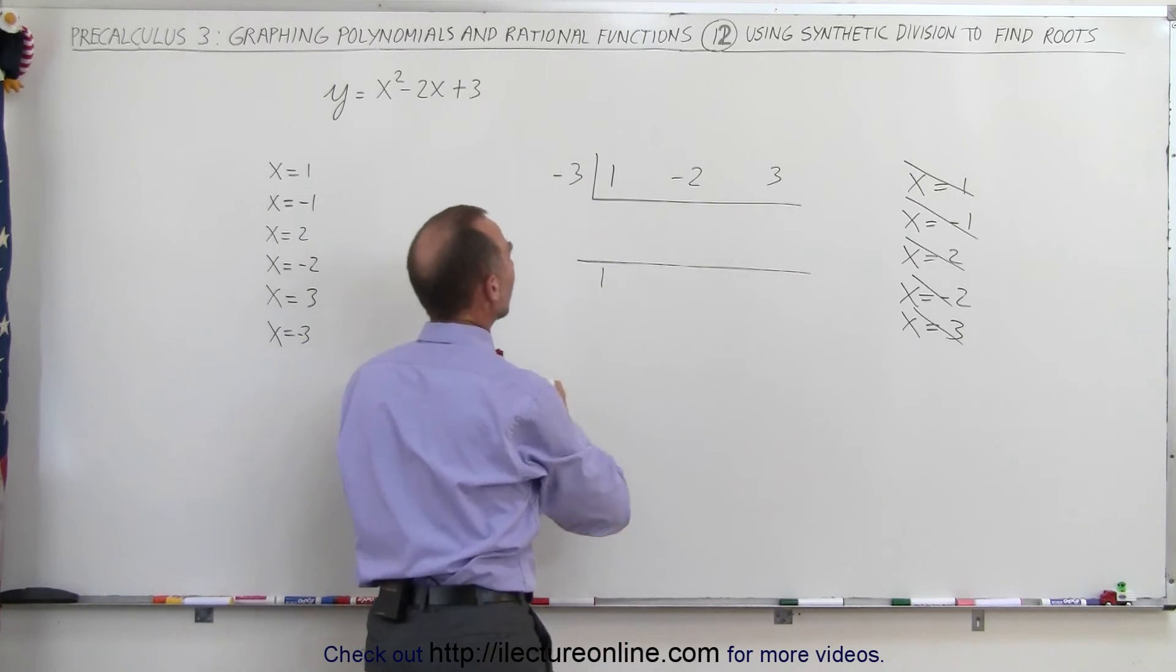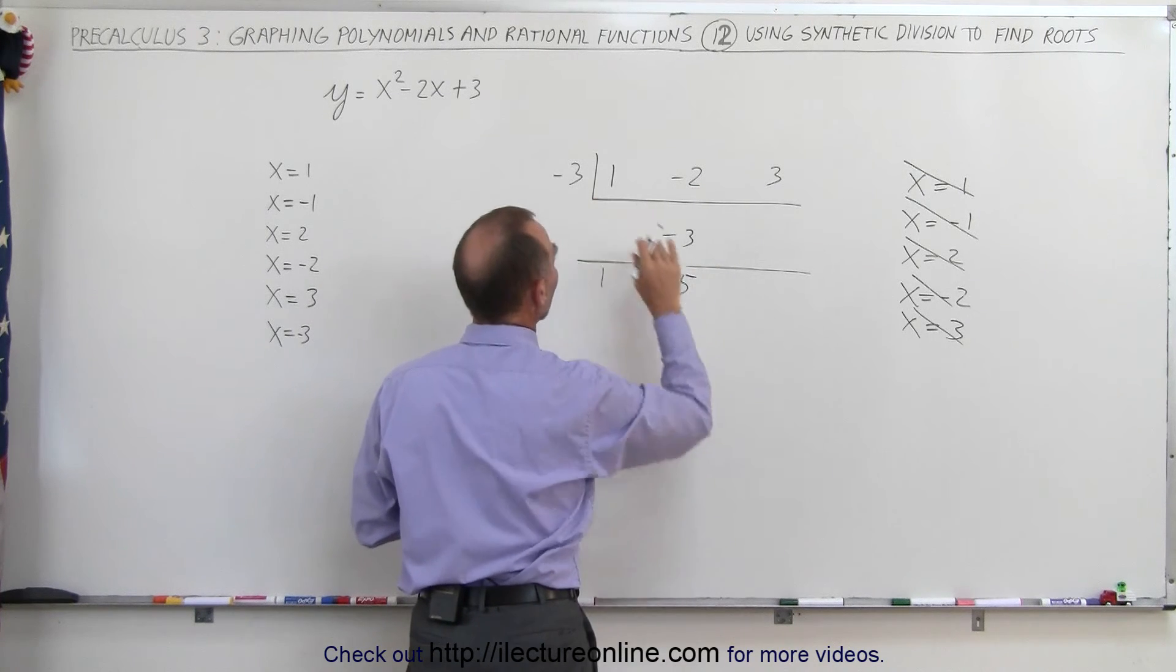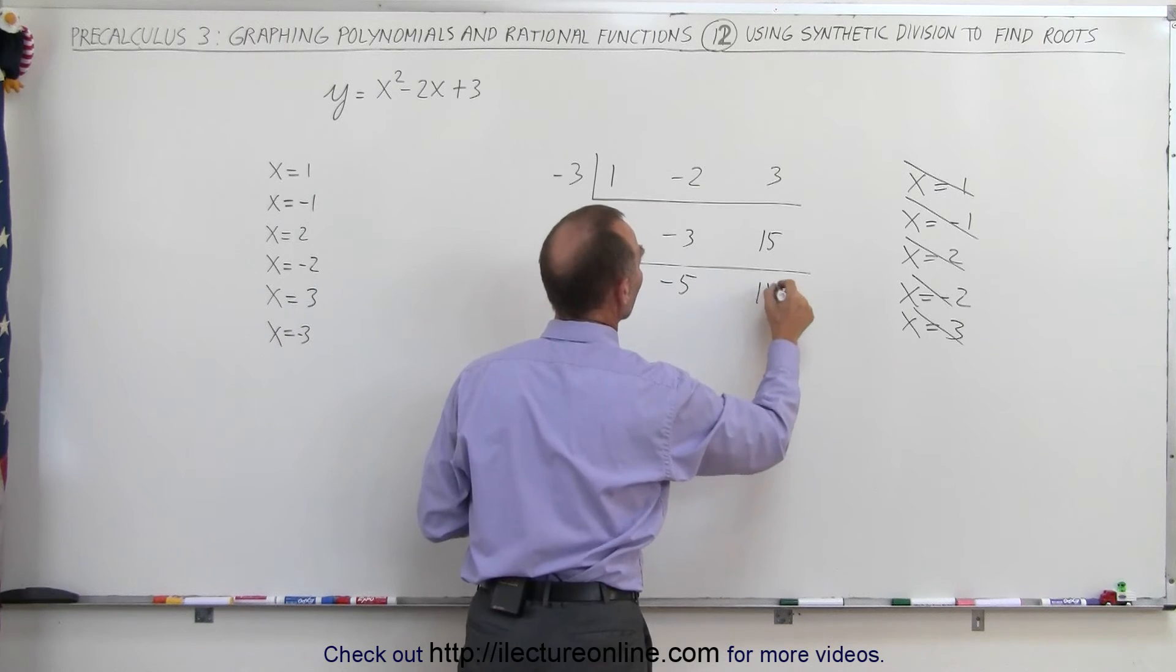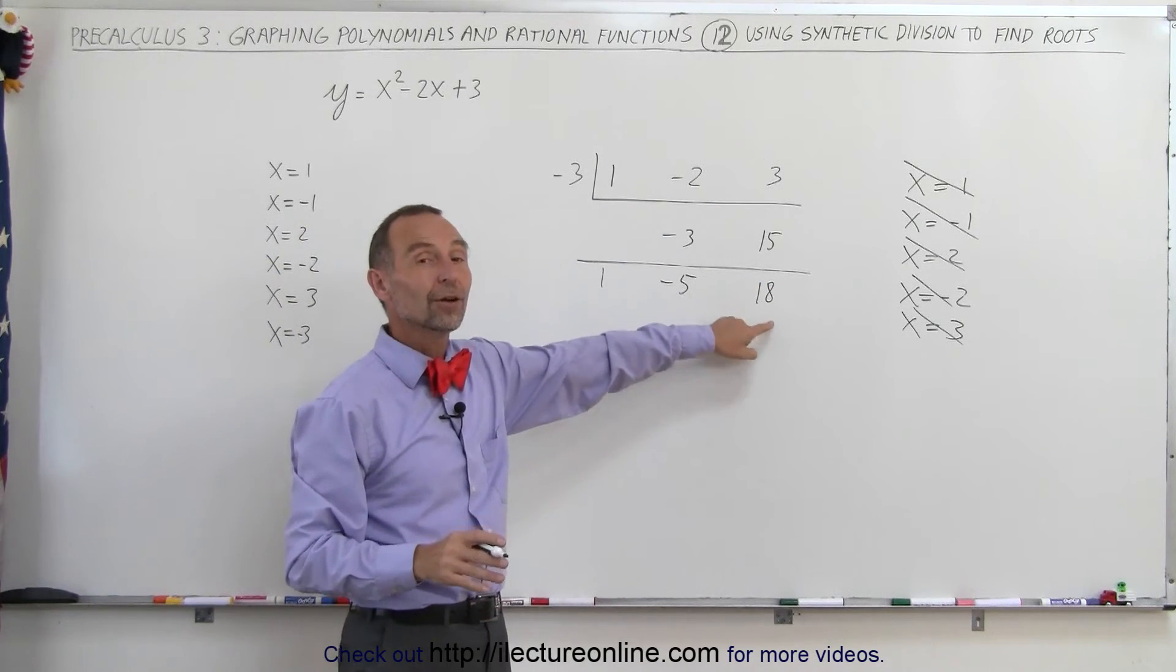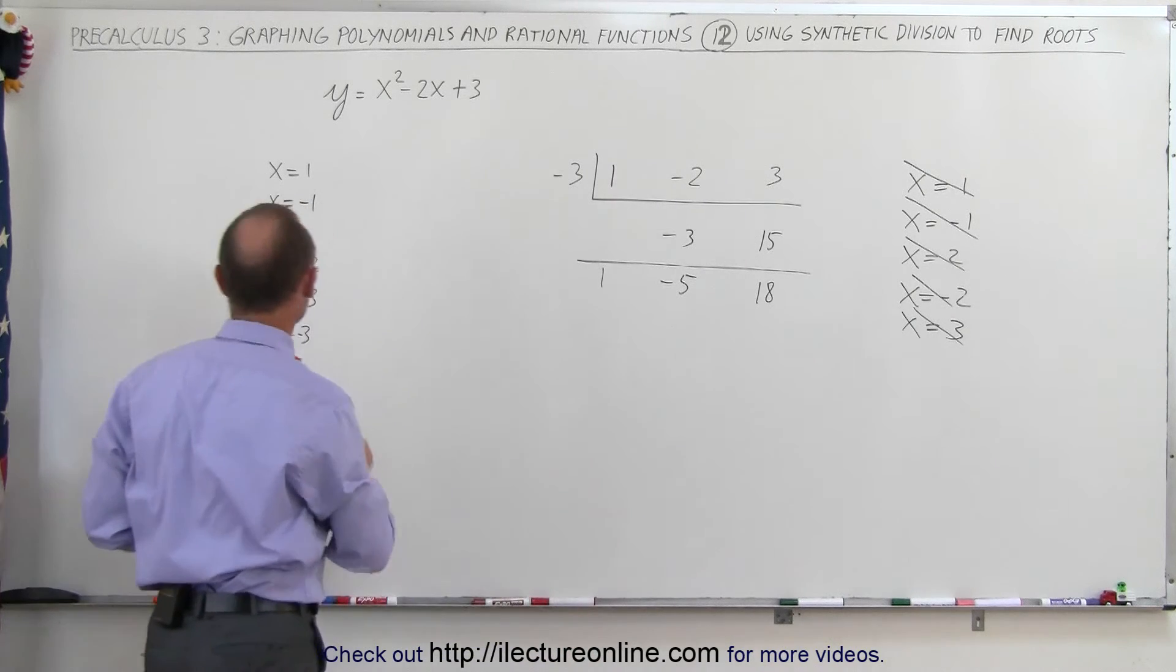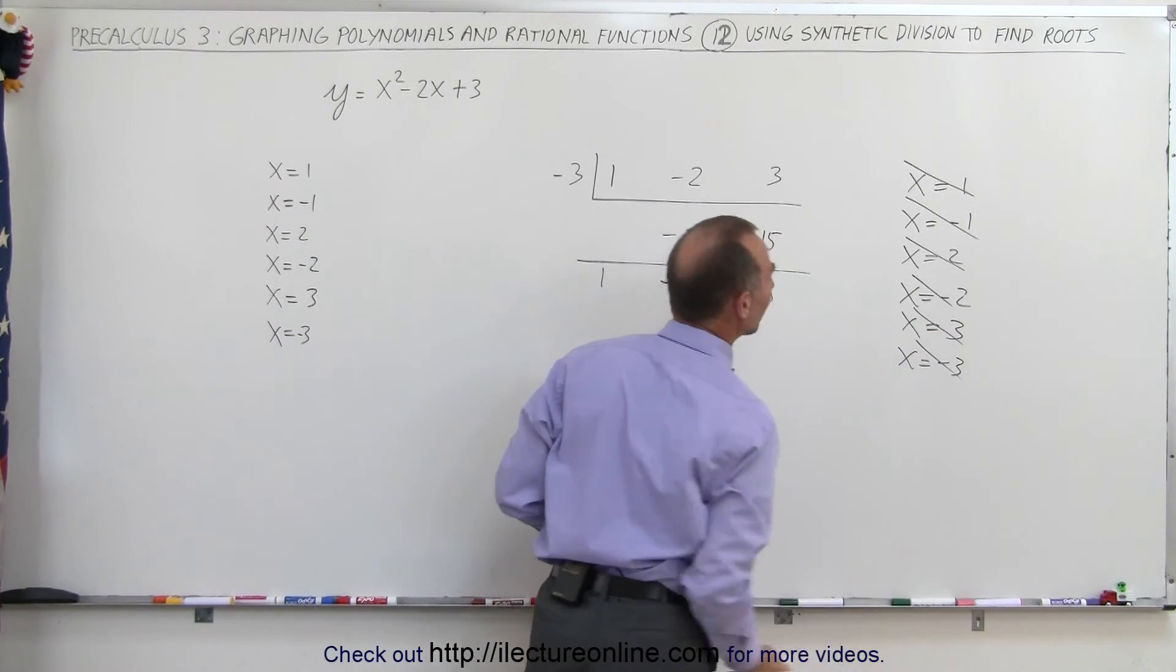Negative 3 times a 1 is equal to negative 3, add it together, you get negative 5. Negative 3 times a negative 3 is a positive 15. Add it together, you get a positive 18. And it looks like that number is getting bigger and bigger. So again, I do not believe that there's a root. X equals negative 3 does also not represent a root.